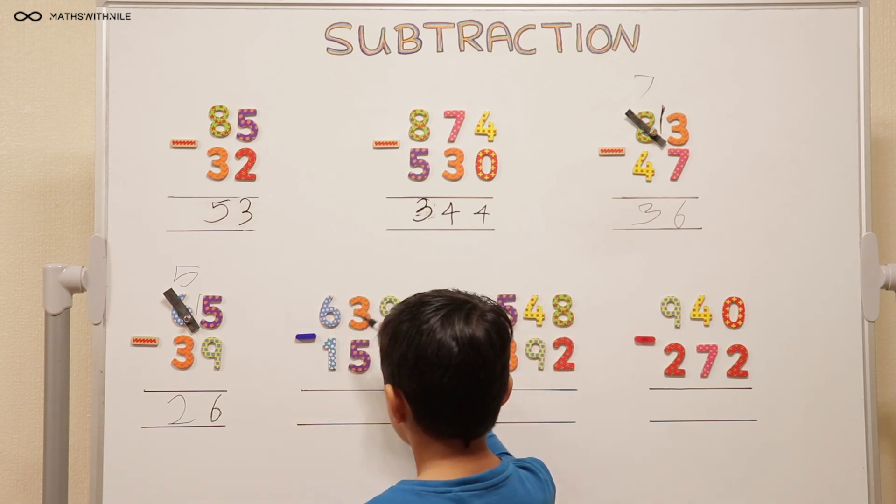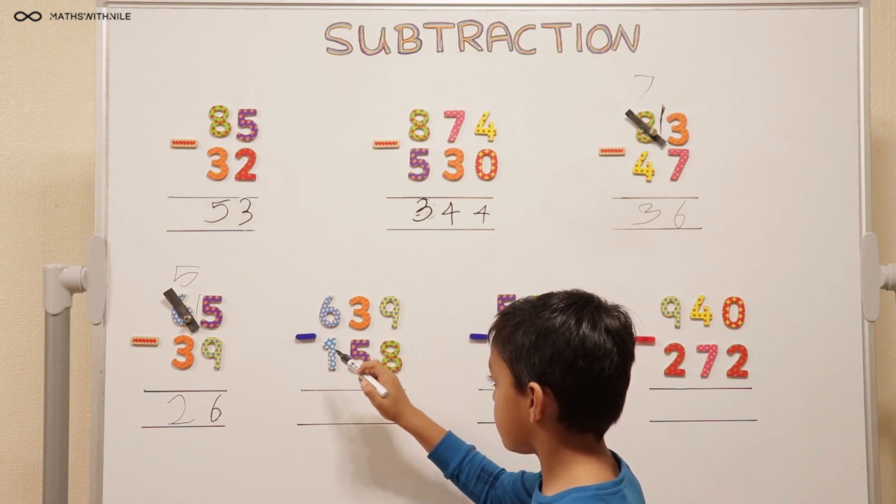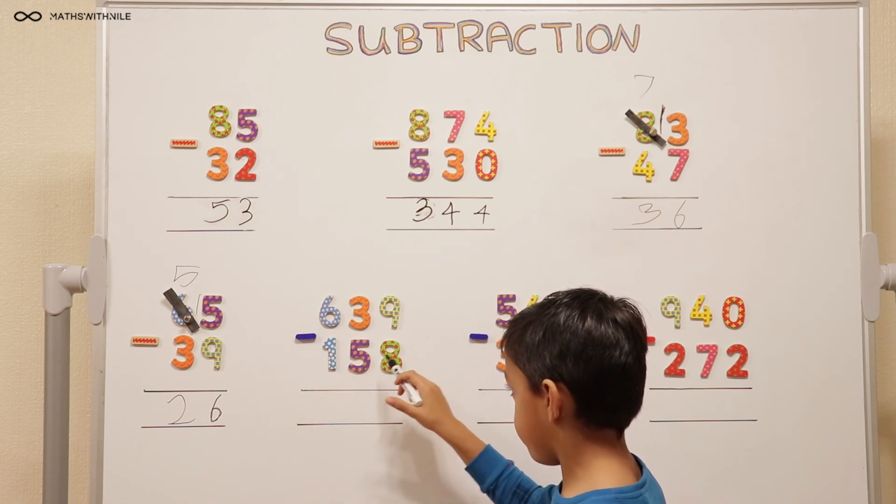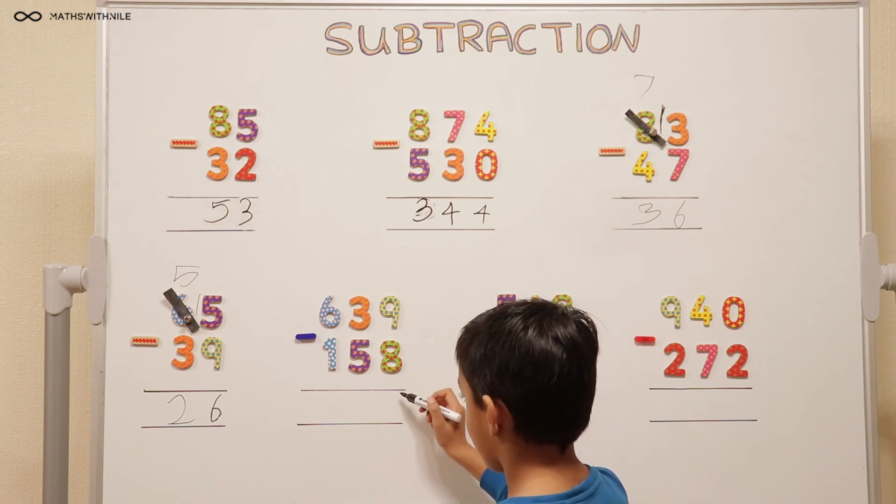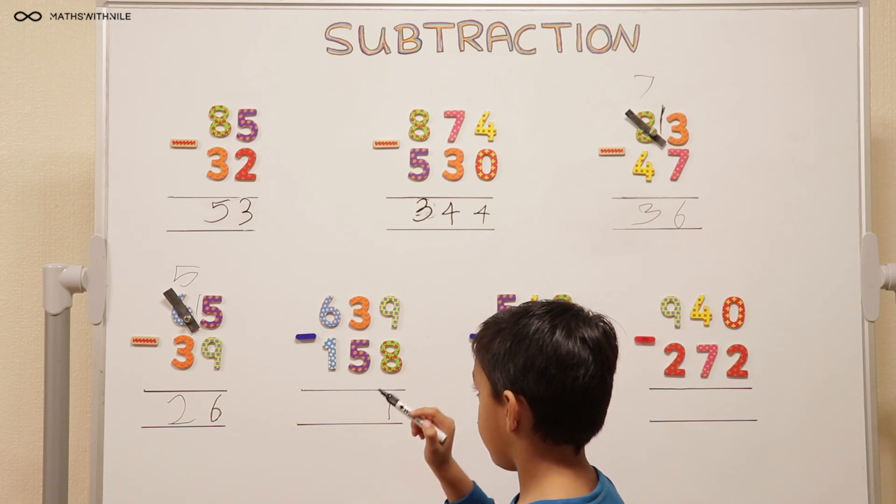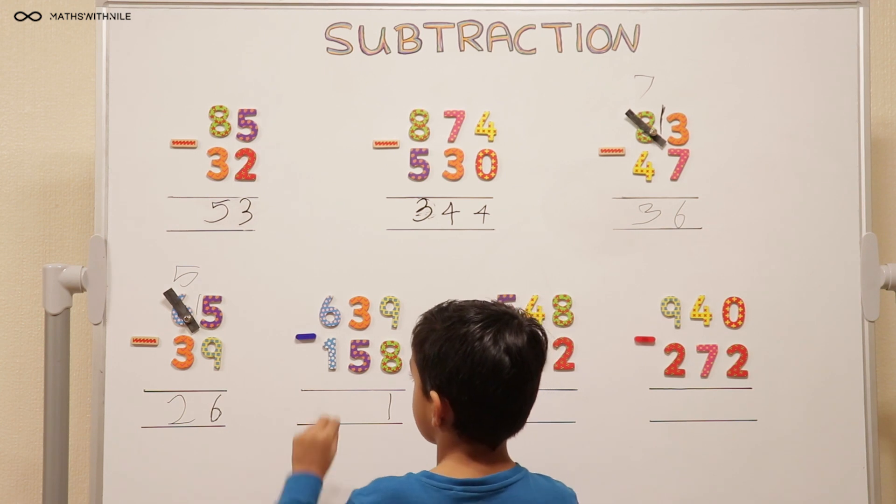What do we do first? Stand to the side. So this is 639 take away 158. So 9 take away 8 equals 1. Good. 3 take away 5 doesn't work. So we'll cross this out.